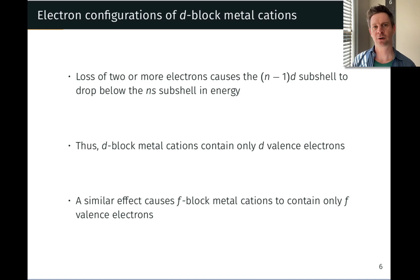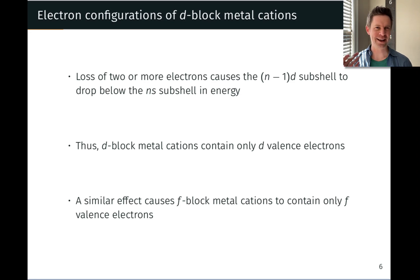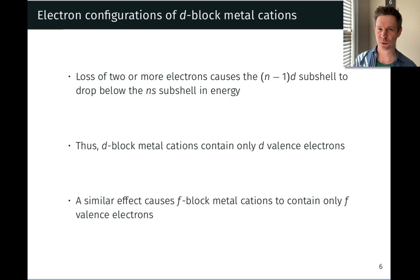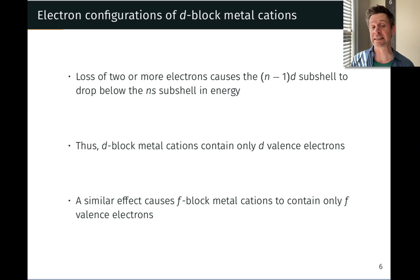A key point to touch on with transition metal cations in particular is that their electron configurations contain only D or F electrons — in the case of the lanthanides or actinides. The reasons for this are a little deeper than the cursory explanation that 'the S electrons are lost first.' That's an inaccurate way to talk about what's going on, so here we're going to dig into the actual reasons why transition metal cations contain only D electrons.